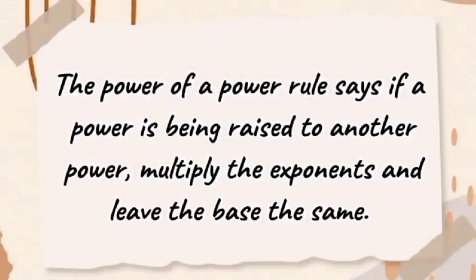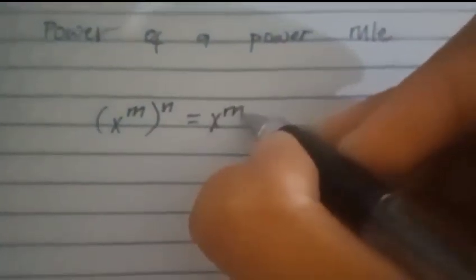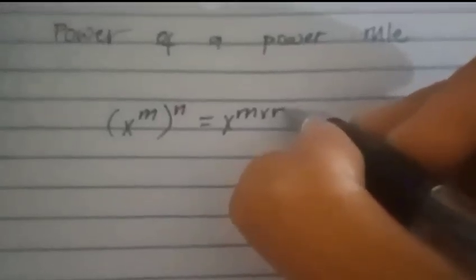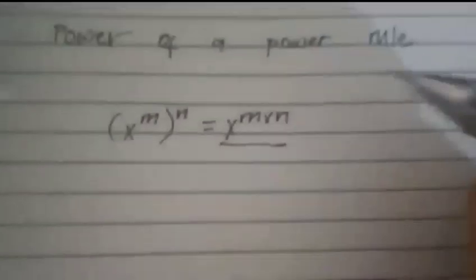The power of a power rule says, if a power is being raised to another power, multiply the exponents and leave the base the same. Power of a power rule: x to the M to the N is equal to copy the base, which is x, M times N. And that is the answer.